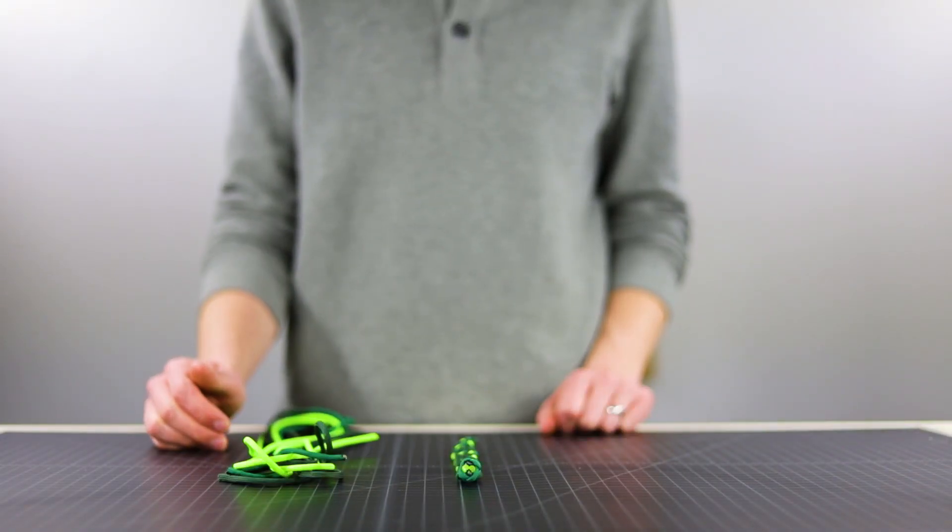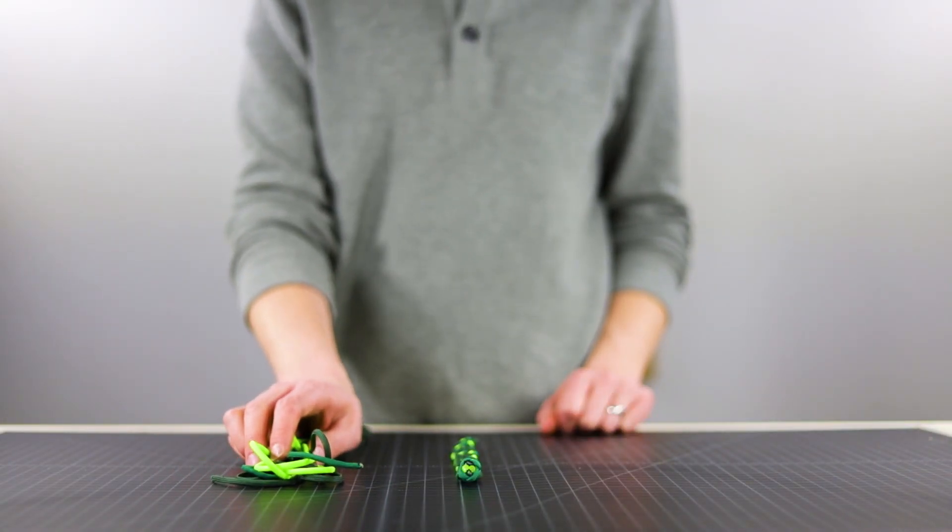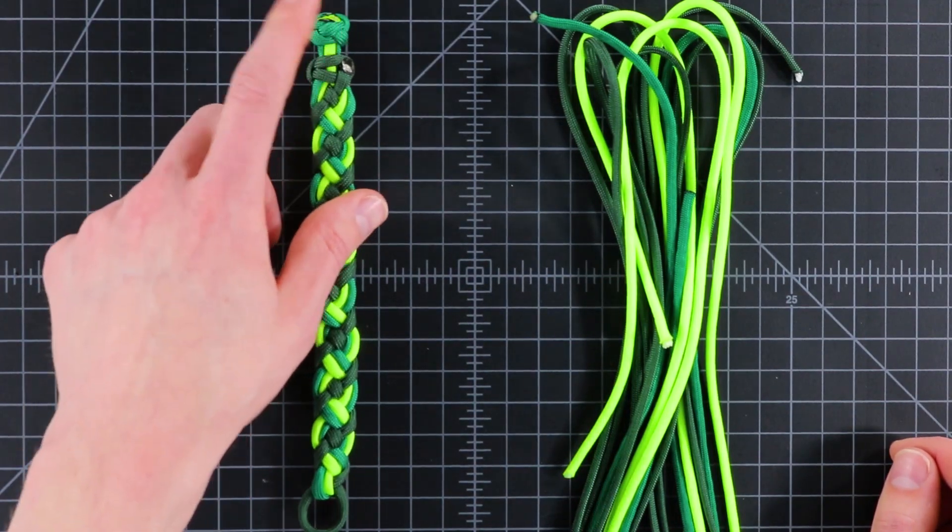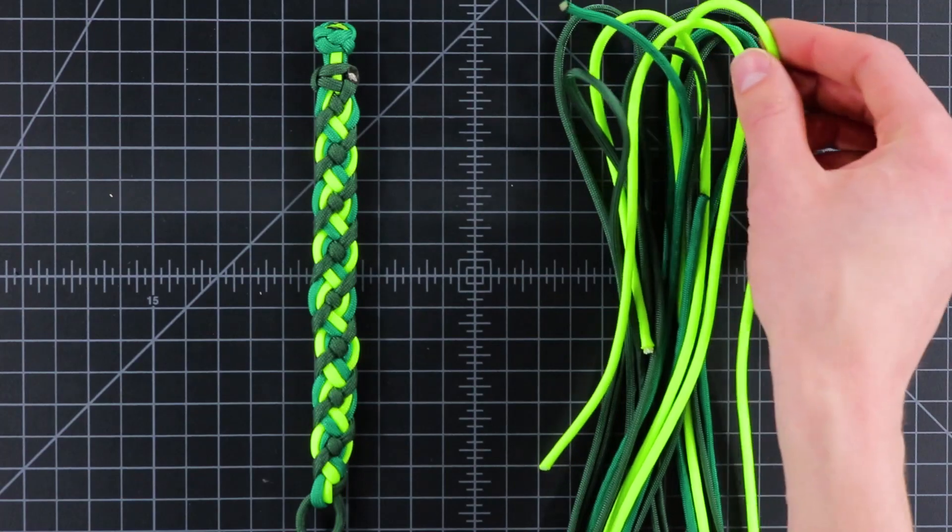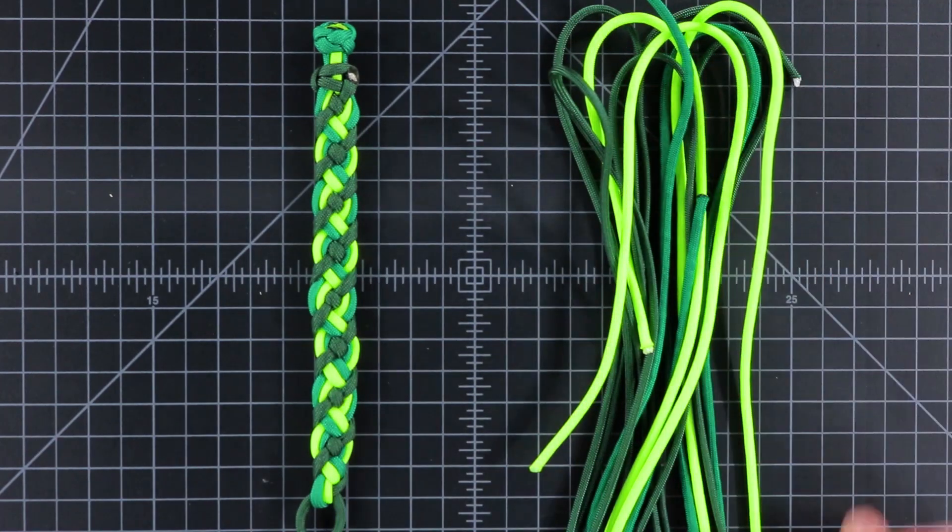For this bracelet you're not going to need any hardware. I've just got my three colors of paracord, and we're going to be using a diamond knot for a buckle. The colors I've got are emerald green, neon green, and kelly green, so let's get started.